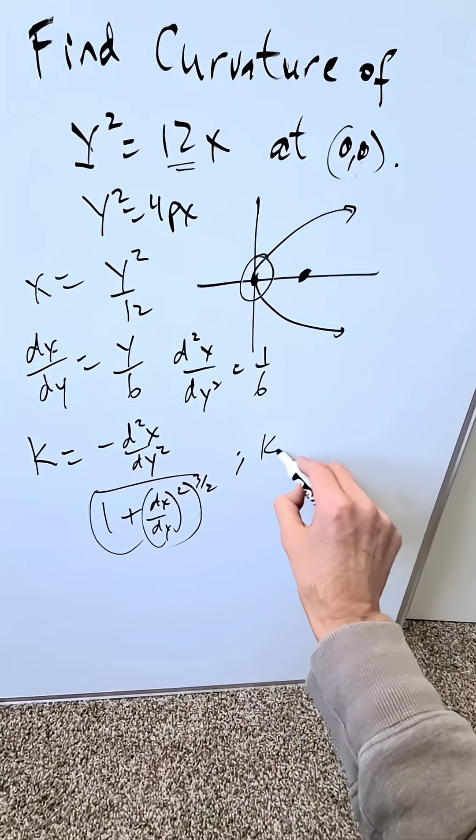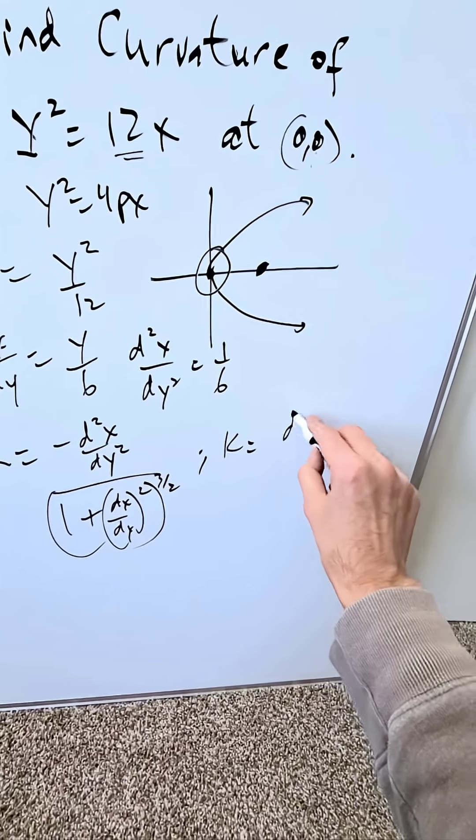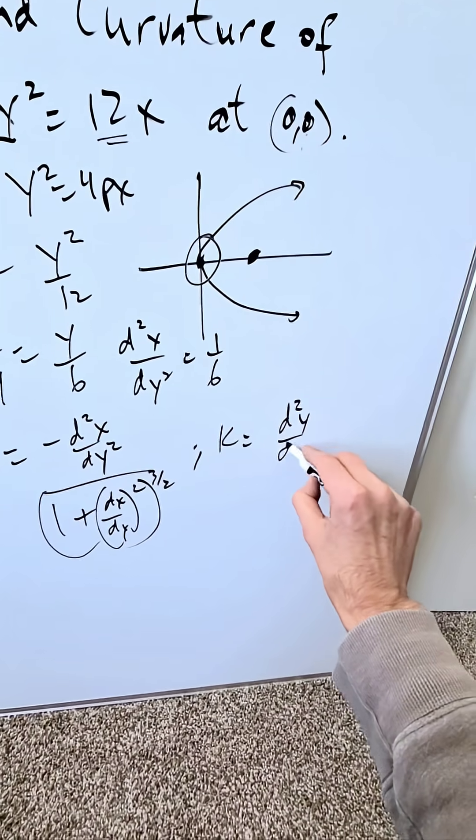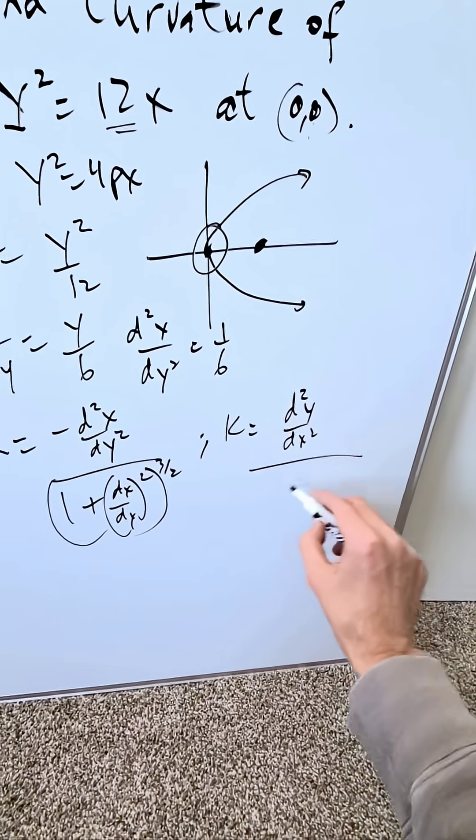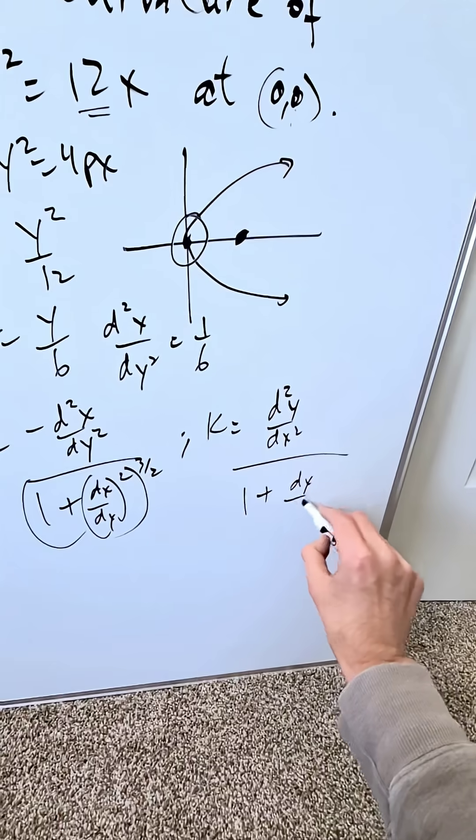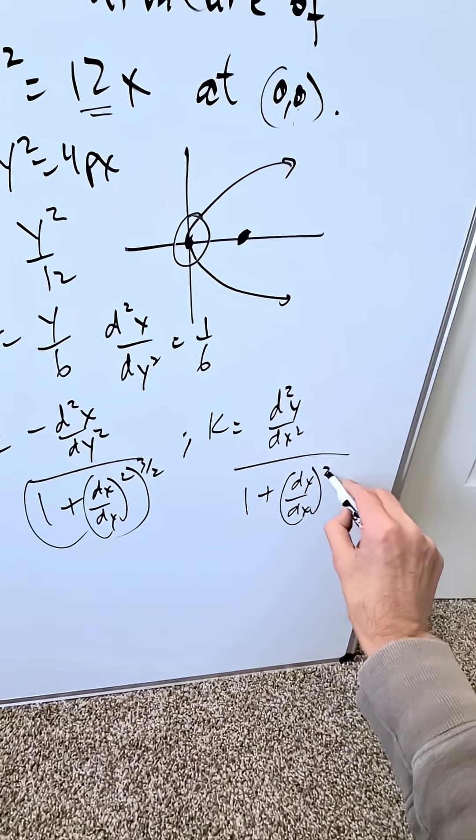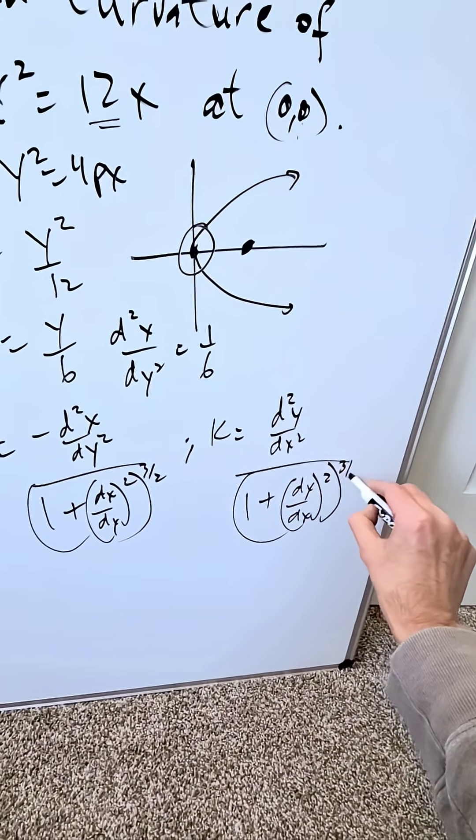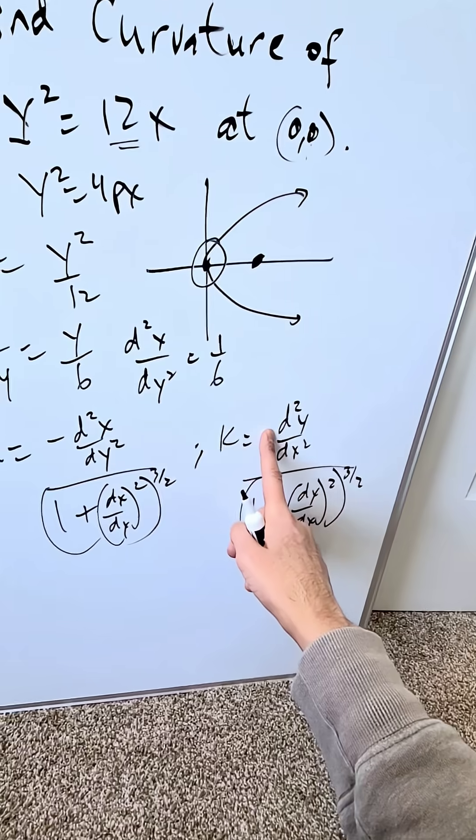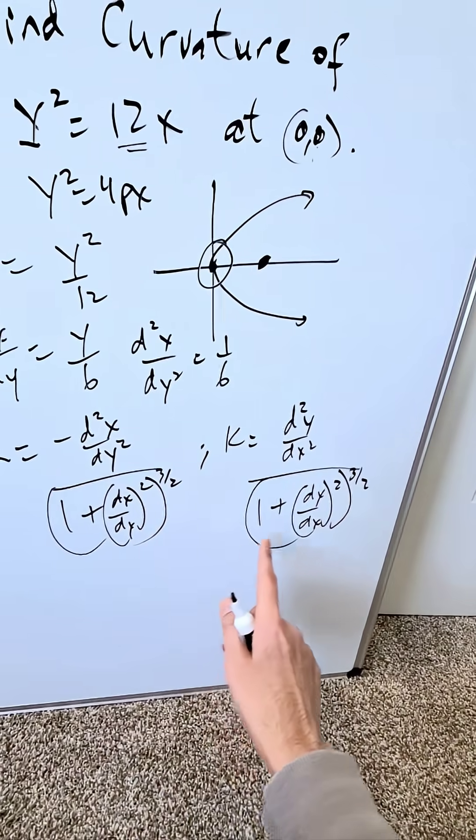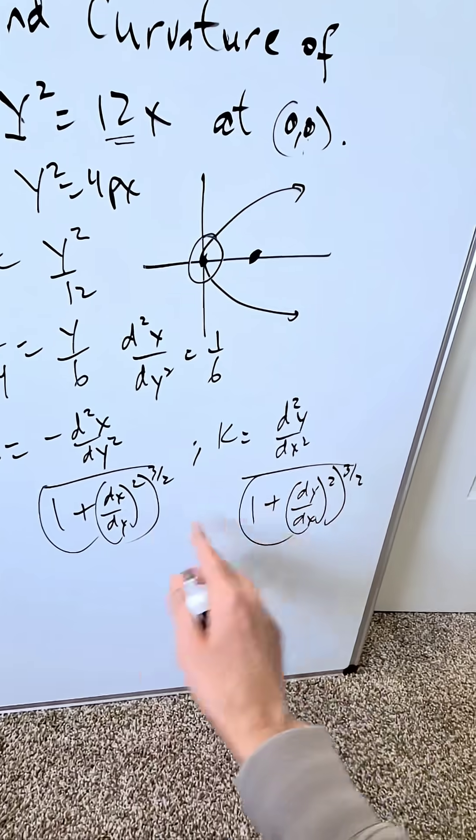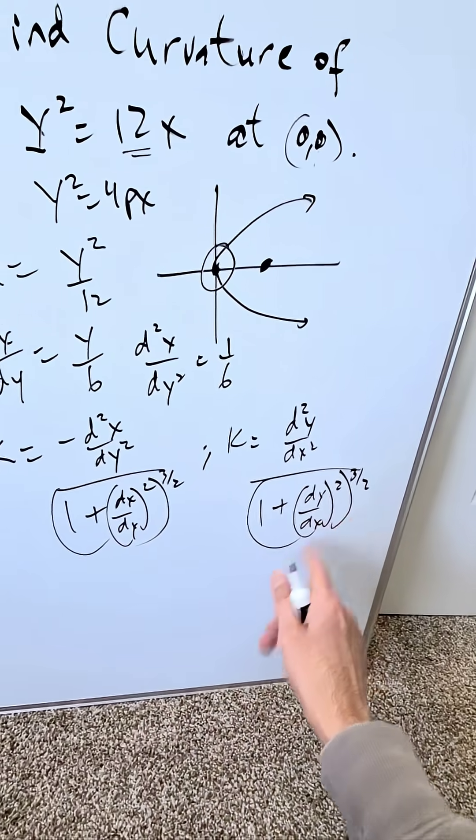Now look how the formula changes if you're doing curvature of a function. You would have d²y/dx² with no minus sign, divided by (1 + (dy/dx)²)^(3/2). You're seeing the minor differences: there's no minus here but there is for the other; you're looking at dy/dx here versus dx/dy there.